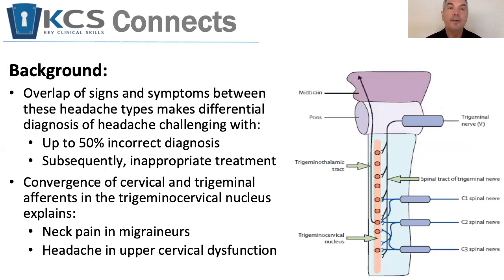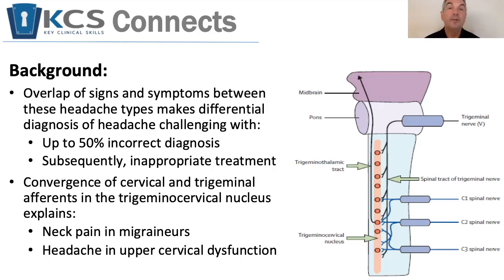Because of this overlap of signs and symptoms between these two diagnoses, you can get misdiagnosis — and some research indicates up to 50% of that. As such, you get the wrong treatment and you don't get better. The reason for this overlap tends to be the convergence of both cervical and trigeminal input into the trigeminal cervical nucleus. As such, neck pain can be experienced in individuals who get migraines, and headache can be experienced in those individuals with upper cervical dysfunction.